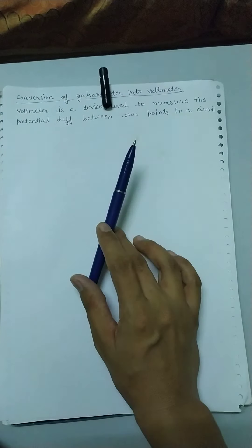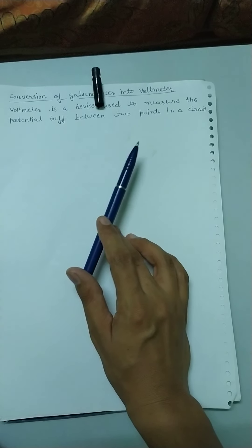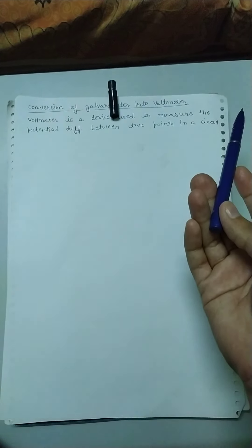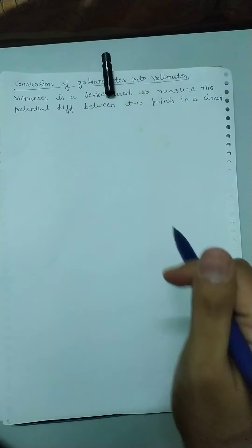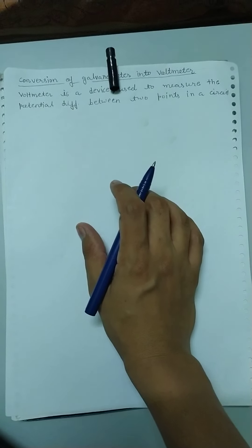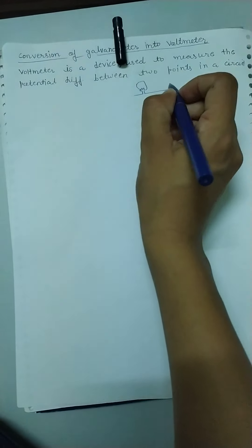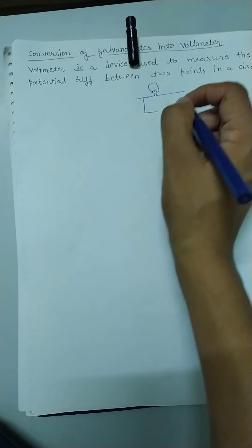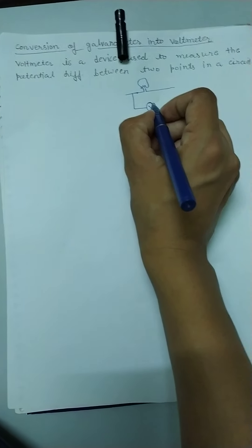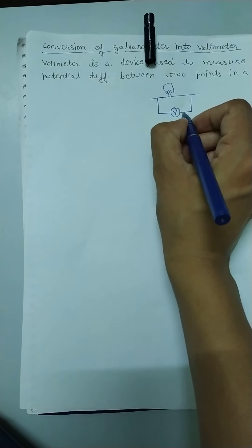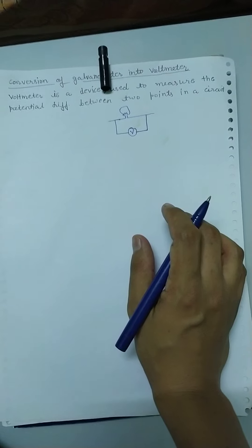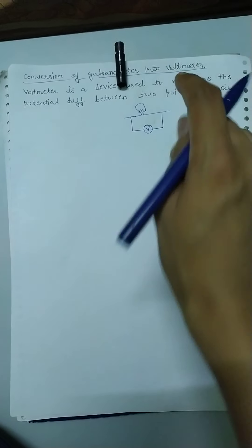Students, as you all know, voltmeter is a device which is used to measure the potential difference in an appliance. Jo bhi appliance mein potential difference ko measure karne ke liye hum voltmeter ka use karte hain. As you all know, voltmeter is always connected in parallel. Potential difference same rehta hai students.